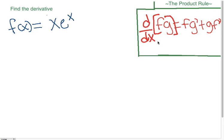So the product rule states that the derivative of a product of two functions is the first function times the derivative of the second function plus the second function times the derivative of the first function.